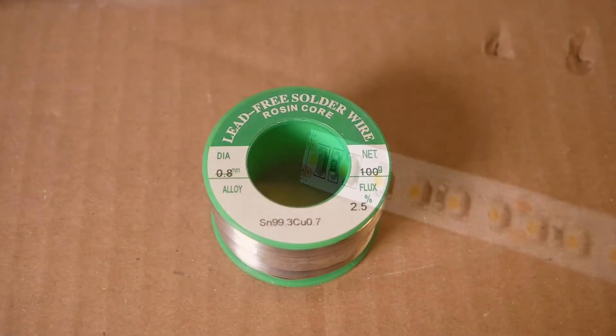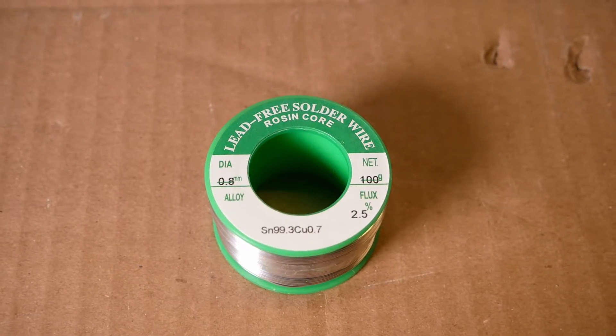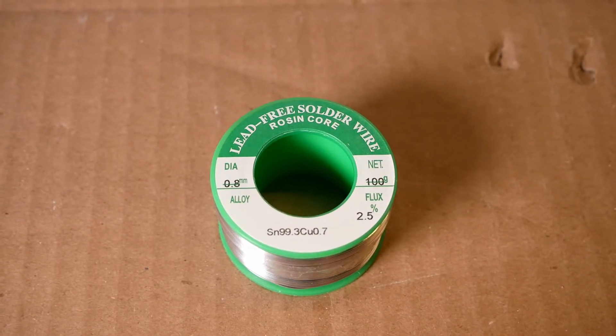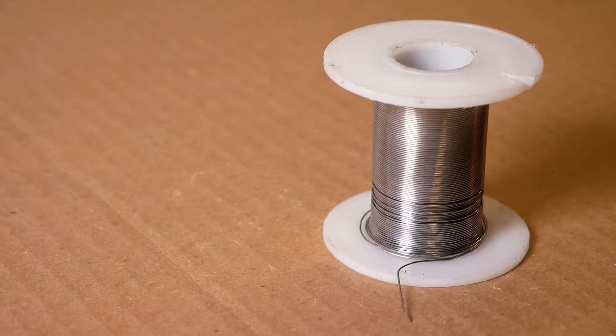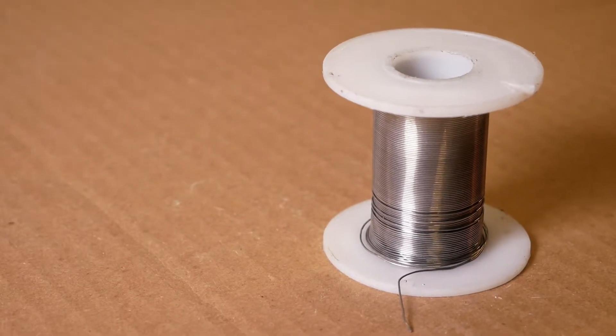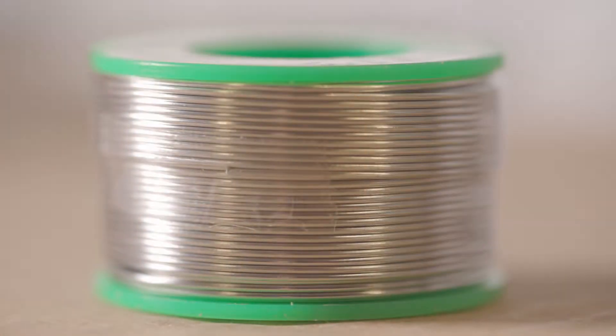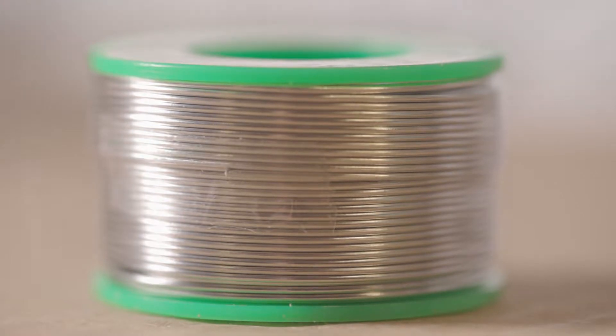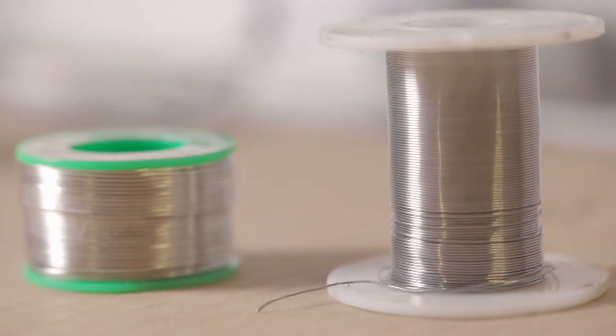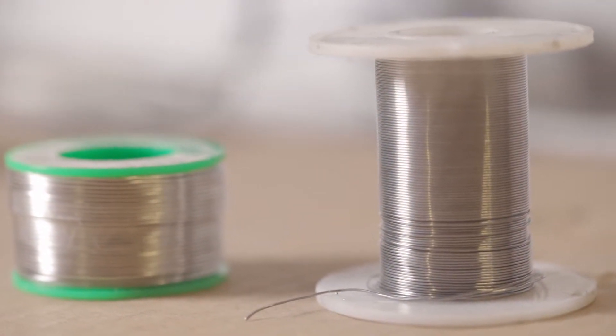There's lead-based solder and lead-free solder. Most factory-produced products use lead-free solder, but lead solder is also readily available, so you might have either type. Lead-free solder has a higher melting point than lead solder, so you'll need a bit hotter soldering iron to work with it. We'll show you how to use both kinds.